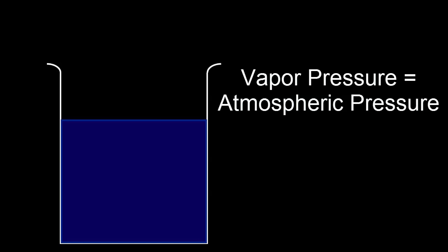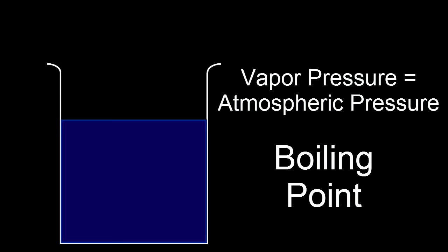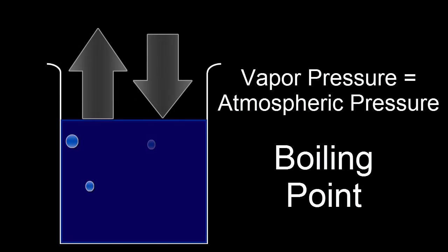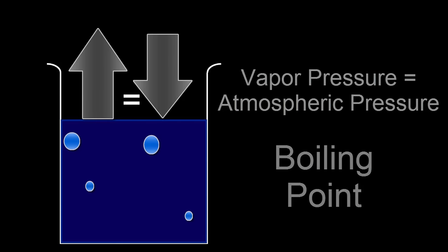We can make boiling happen by either increasing the vapor pressure or decreasing the atmospheric pressure. Either way, once the vapor pressure and the atmospheric pressure are equal, we've reached the boiling point, and boiling can begin.